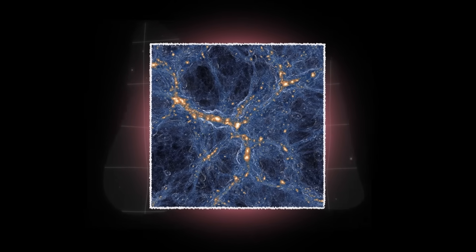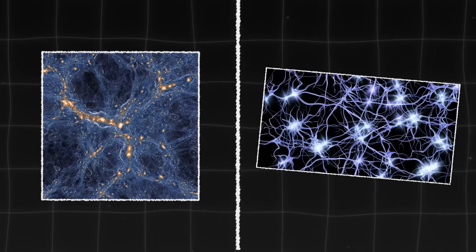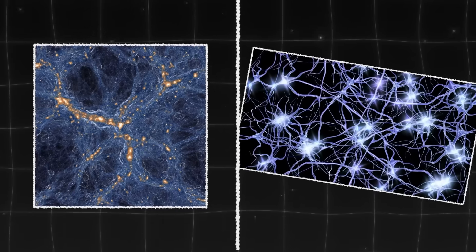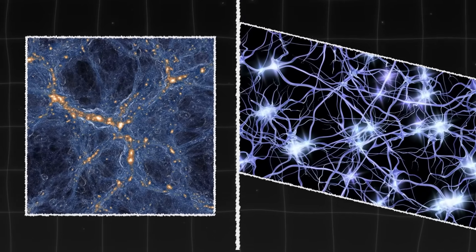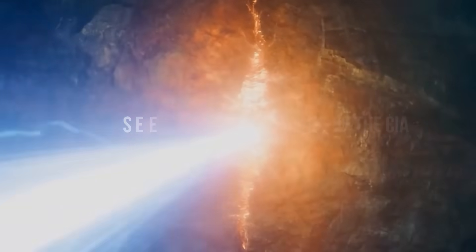For example, this is a cluster of galaxies from the Millennium simulation, and these are the neural connections in our brain. The scales are radically different, but the images are pretty similar, aren't they? But if God is always nearby, can we somehow get in touch with him?